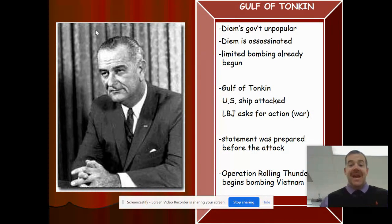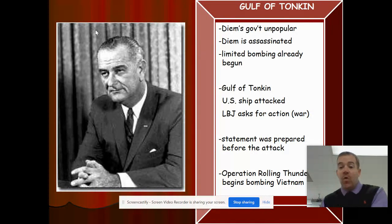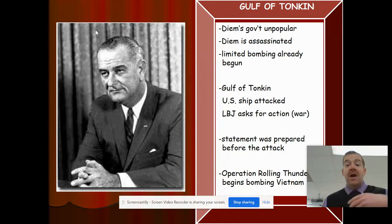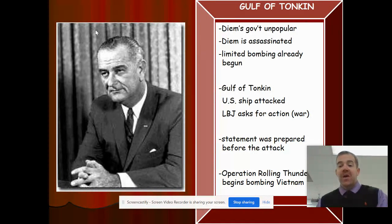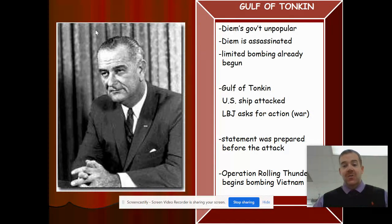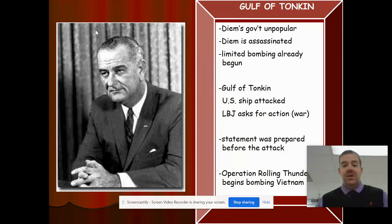LBJ — Lyndon Baines Johnson — asked Congress for action. He didn't necessarily ask for a declaration of war, but he asked for action. The statement had been prepared before the attack, so he already had designs on escalating the war in Vietnam. Before the Gulf of Tonkin, the United States had sent advisors. After the Gulf of Tonkin Resolution, they gave the president authorization to send in military troops and basically wage a war — but it was not a declaration of war.